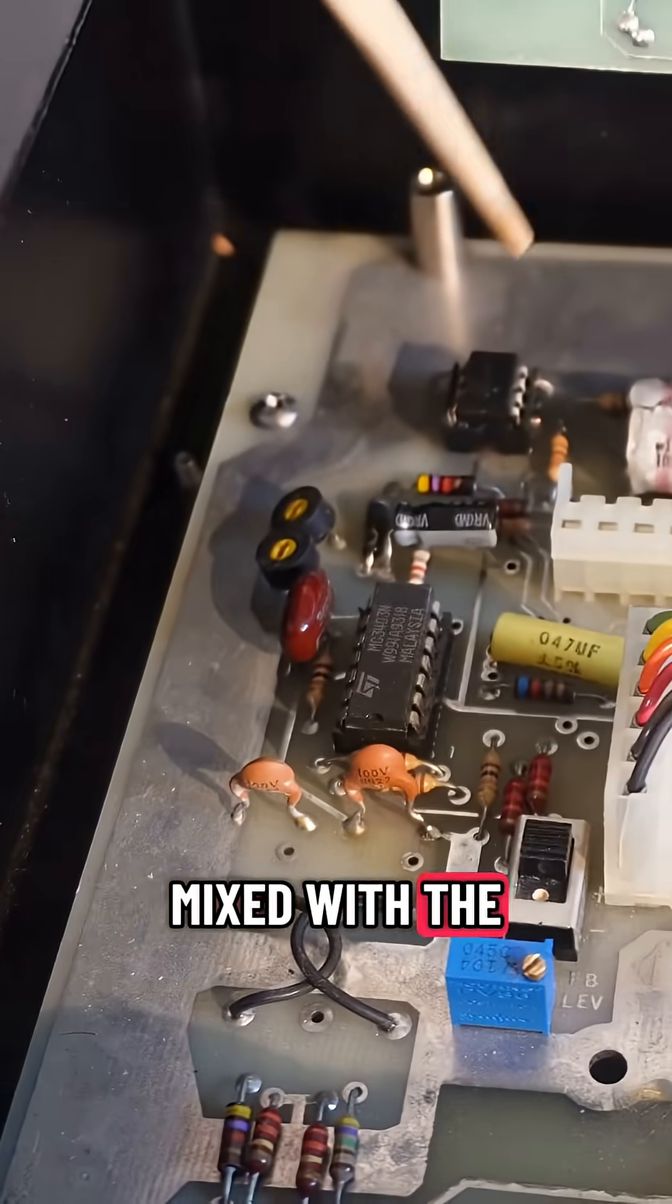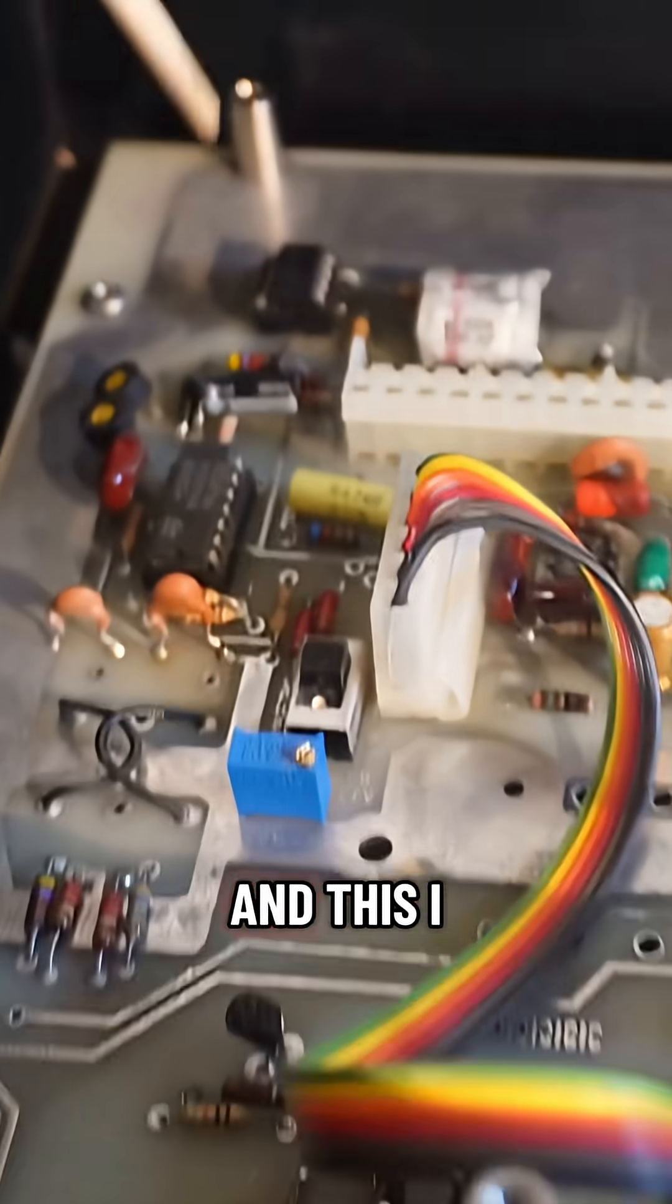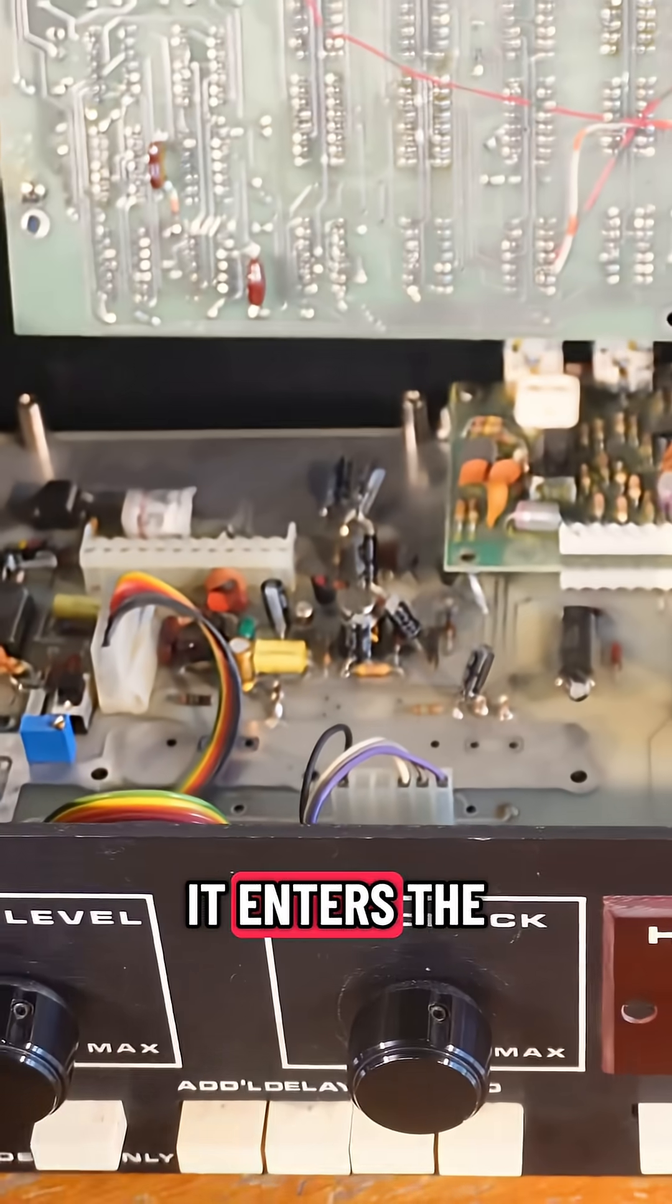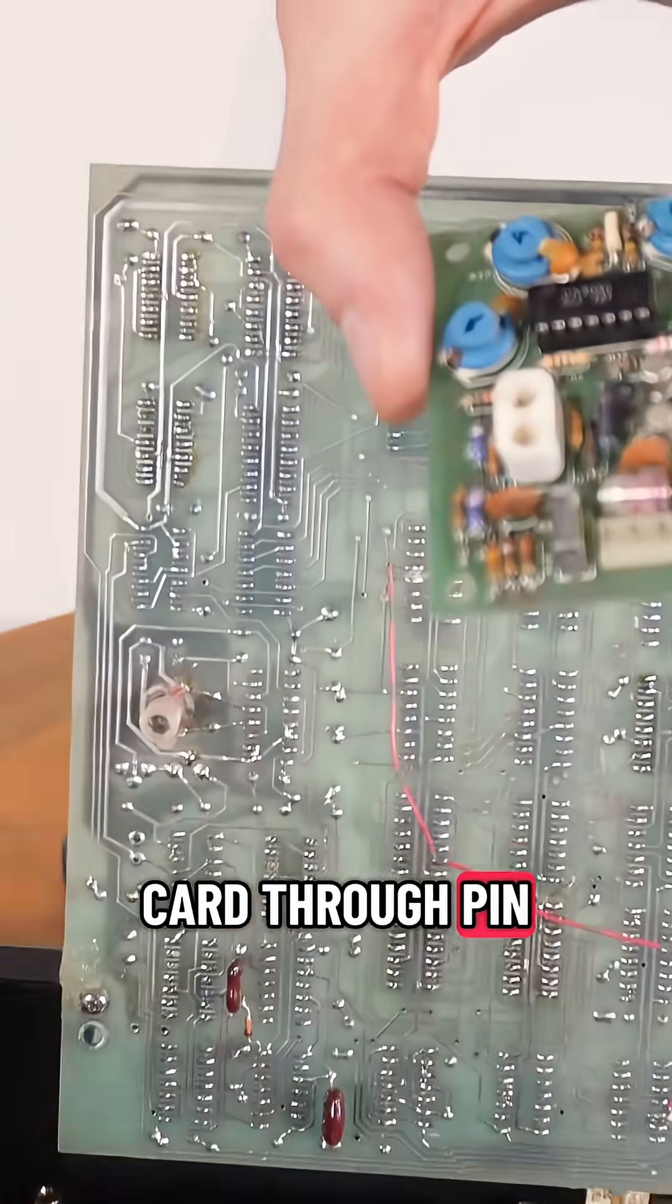and then it's mixed with the output signal through the feedback pod and this IC right here, as you can see in the schematic. At that point, it enters the DBX card through pin 2.